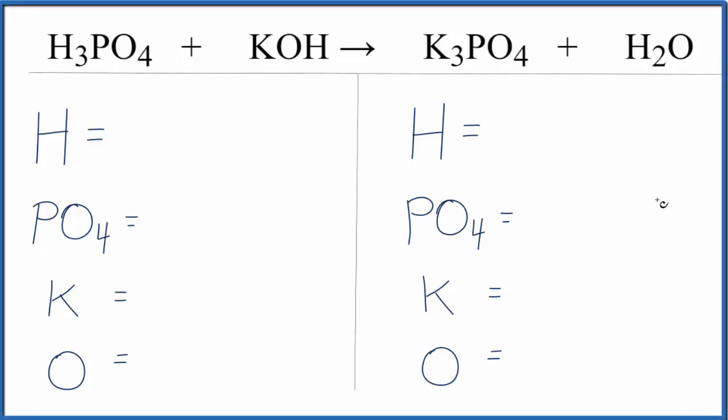In this neutralization reaction, we have phosphoric acid plus potassium hydroxide. That gives us the salt, potassium phosphate, and water.